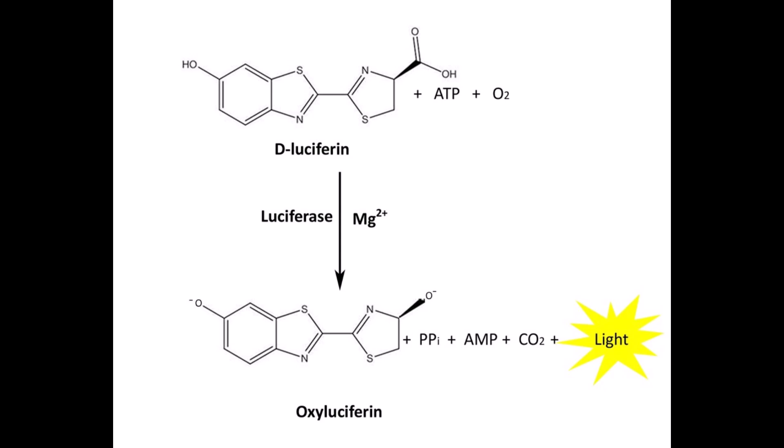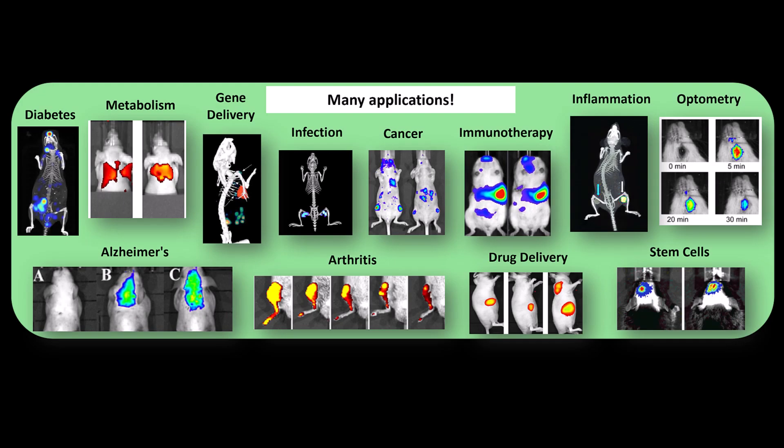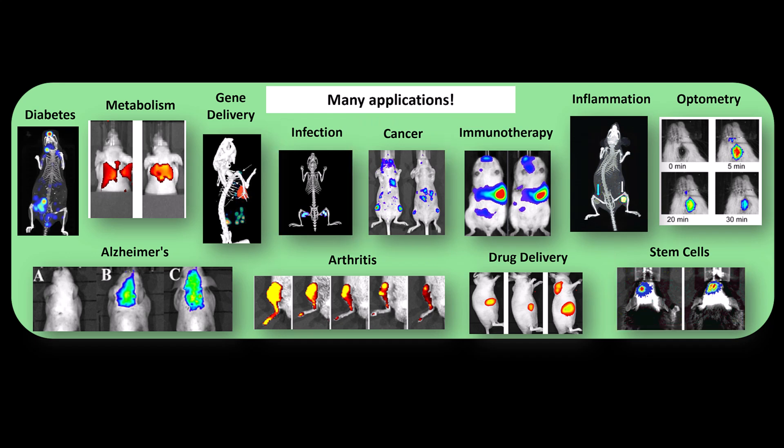The sensitivity, ease of use, and flexibility of these luciferase reporters in conjunction with the ultra-sensitive IVAS systems have expanded the reach of in vivo bioluminescence imaging in various applications including oncology, stem cell research, and infectious diseases, just to name a few. But prior to imaging non-invasively in vivo, we recommend validating and assessing your optical activity in an in vitro setting.